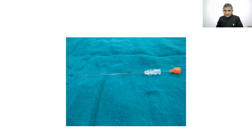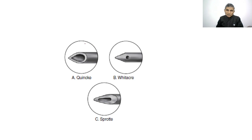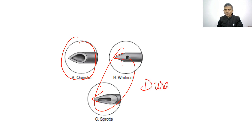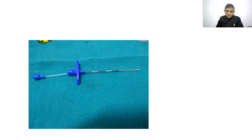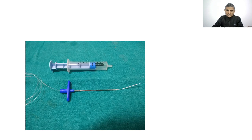This is a spinal needle case. When the tip is inside the subarachnoid space, the stylet is removed and CSF flows out, then the drug is injected. Different types of spinal needles exist: dura-cutting types (Quincke) and pencil-point dura-separating types (Whitacre and Sprotte). This is a Tuohy needle used for epidural anesthesia. After locating the epidural space, the stylet is removed and a catheter is passed through the needle. A loss-of-resistance syringe is used for epidural block.